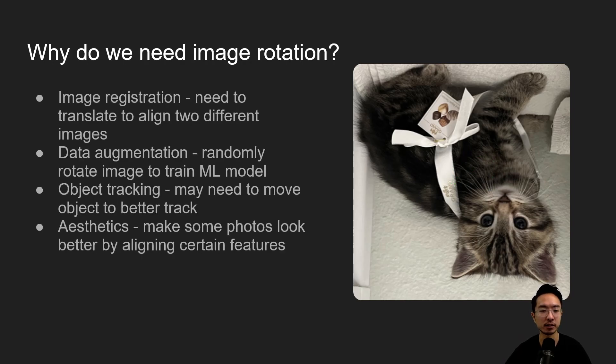So why do we need image rotation? A couple of things why you might need it: one is for image registration if you're trying to align two different things. Last time we talked about image translation, sometimes translating two things is not enough and you need to rotate it. Same thing with data augmentation - translating may not be enough so sometimes you might want to randomly rotate different things in your scene.